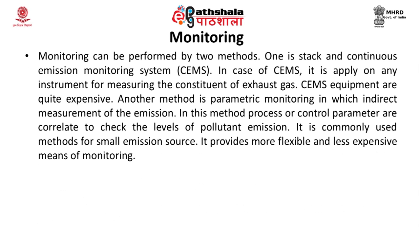Monitoring can be performed by two methods: the stack method and the continuous emission monitoring system (CEMS). CEMS is applied to an instrument for measuring the constituents of exhaust gas; CEMS equipment is more expensive. Another method is parametric monitoring, in which indirect measurement of emissions is used — process or control parameters are correlated to check the level of pollutant emissions. It is commonly used for small emission sources and provides a more flexible and less expensive means of monitoring.